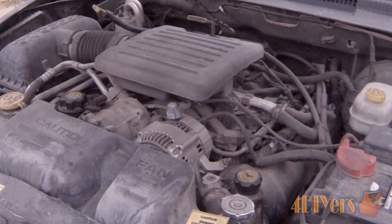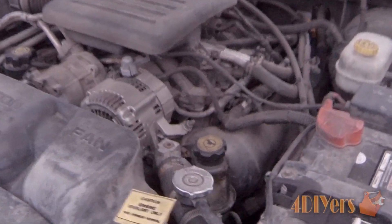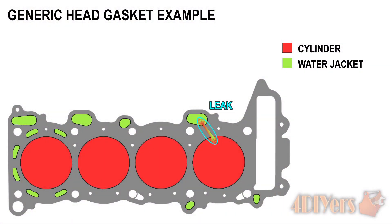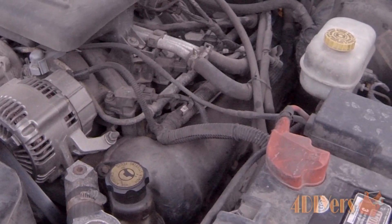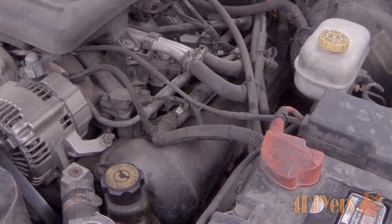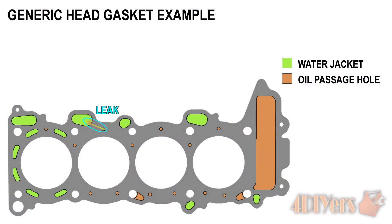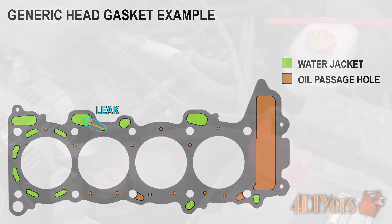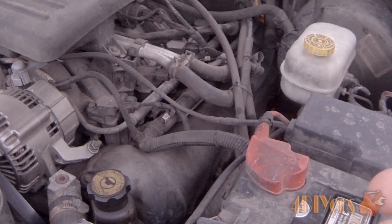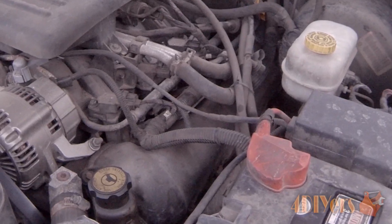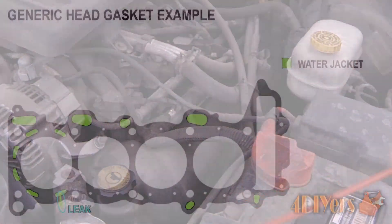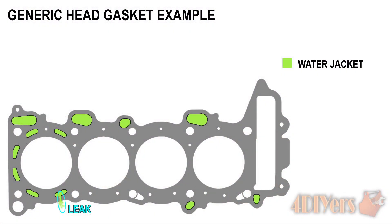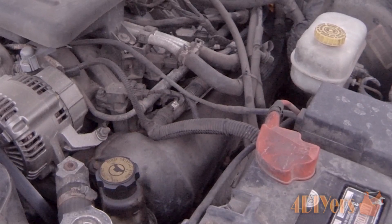There are three different ways the coolant system can go down if you have a faulty head gasket. One is a leak between the water jacket and the combustion chamber — coolant is sucked in, evaporated during combustion, and steam exits the tailpipe. Another is a leak between the water jacket and an oil supply or return hole, causing coolant to mix with oil or vice versa. The third is a water jacket leaking to the exterior of the engine, leaving residue on the outside of the block.